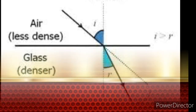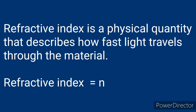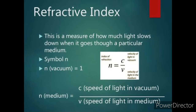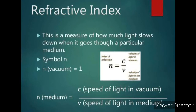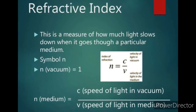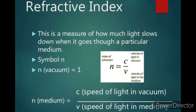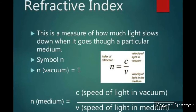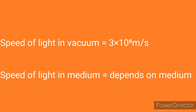The next important topic is refractive index. Refractive index is a physical quantity that describes how fast light travels through a material. It is represented with the symbol n, where n equals the speed of light in vacuum divided by the speed of light in the medium. In simple words, refractive index is the ratio of the speed of light in vacuum to the speed of light in the medium. The speed of light in vacuum is represented by c and the speed of light in the medium by v, so n = c/v.